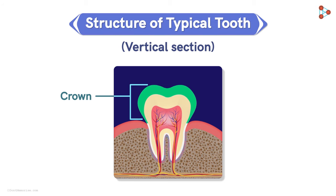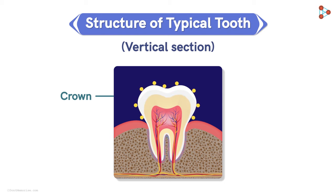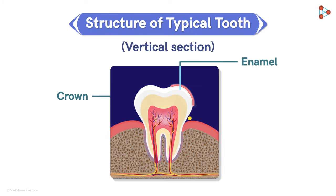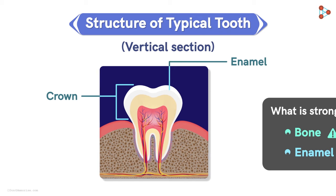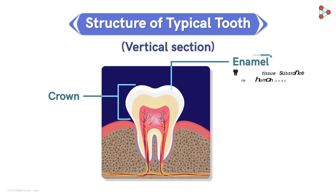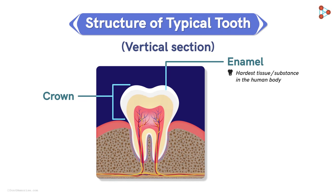Since the crown is the part exposed to all types of food particles, and which encounters microbes as well, it needs to be well protected. Hence, it is coated with an extremely hard covering named enamel. Now, if I ask you, what is stronger — a bone or the enamel? I am sure your answer will be bone. But that is not the case. It is actually the enamel. Yes, enamel is the hardest tissue or substance in the human body.